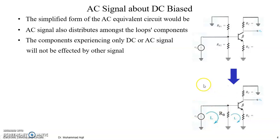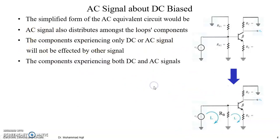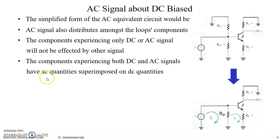Components experiencing only DC or only AC signal will not be affected by the other signal. Currently we have no such component experiencing only a single source, but we must know the rule: components experiencing both DC and AC signals — as is the case in this circuit — have AC quantities superimposed on DC quantities.